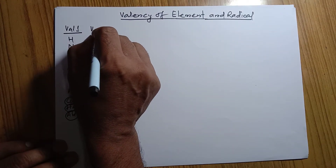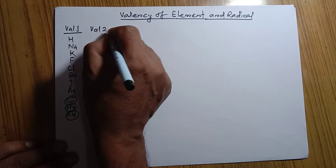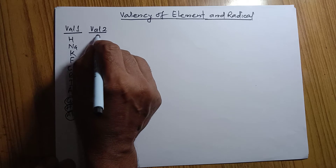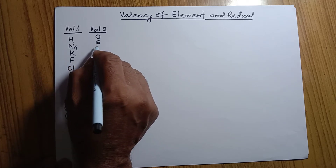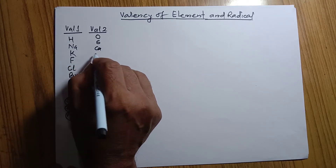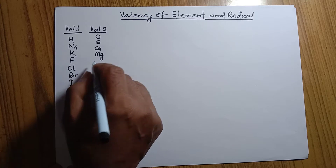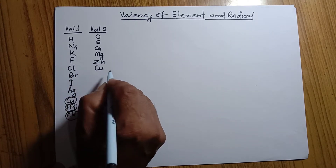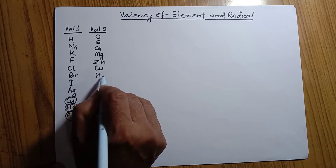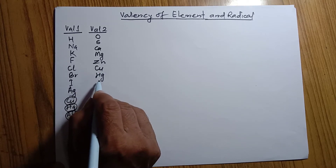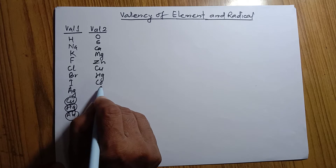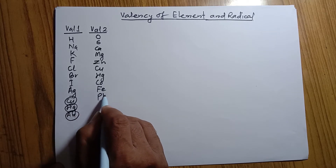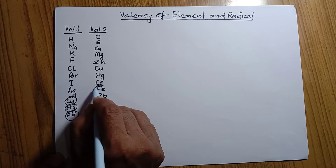In the same way, the elements having valency 2. We have to remember these also. They are oxygen, sulfur, calcium, magnesium, and there are many — zinc, copper, mercury, iron, cobalt, and lead. These can be remembered as elements having valency 2.